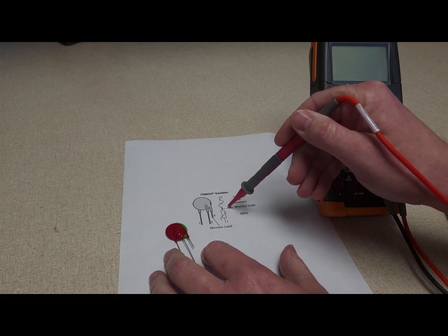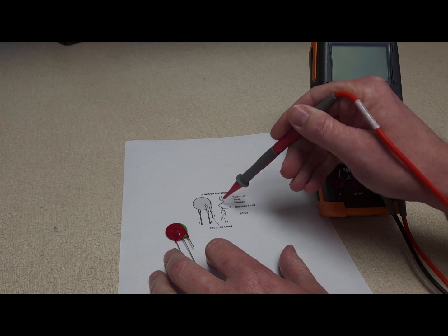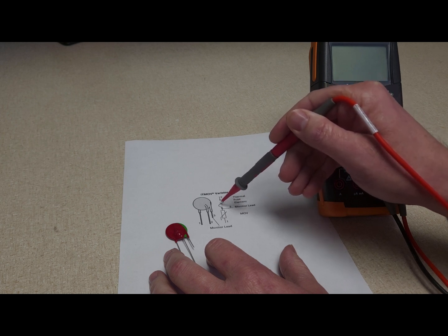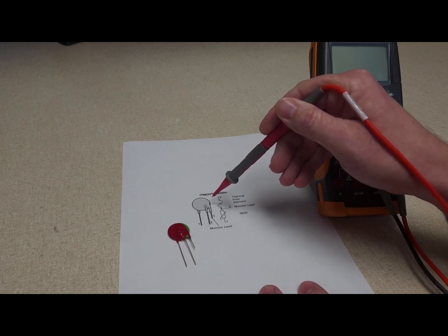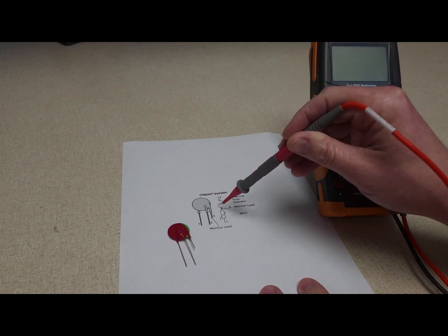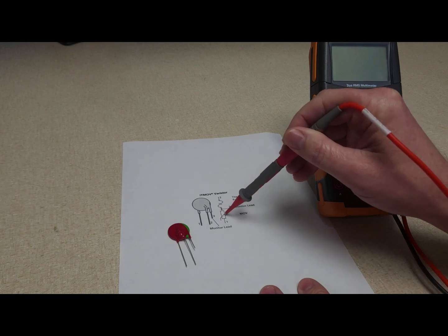A thermal fuse is designed to blow or break whenever the temperature exceeds its rating. So the idea with this is that when you get an excessive surge, instead of the MOV part exploding and sending hot metal shrapnel everywhere...